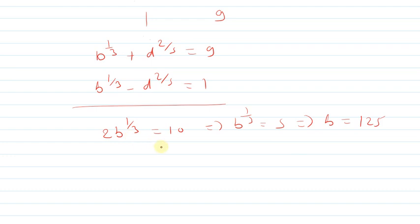Then subtracting the equations, 2 times d power 2/5 equals 8, so d power 2/5 equals 4. So d will be equal to 4 power 5/2, which is 2 power 5, that is 32.